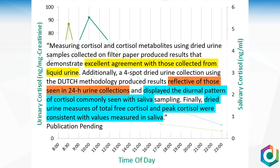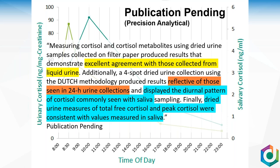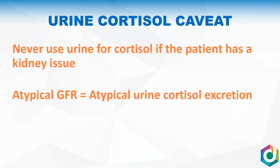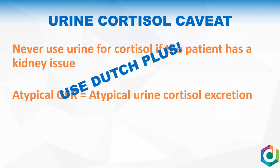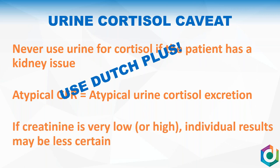In validation, we got excellent agreement between liquid and dried, the four-spot sample was reflective of a 24-hour urine collection, and it displayed the diurnal pattern of cortisol commonly seen with saliva. Dried urine measures of total free cortisol and peak cortisol were consistent with saliva results. This has been submitted for publication. What do we need to be careful of with cortisol in urine? You don't want to use urine for cortisol if the patient has a kidney issue — atypical GFR means atypical urine cortisol excretion. In those cases, use Dutch Plus where we get the free cortisol pattern from saliva.